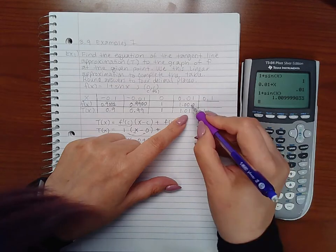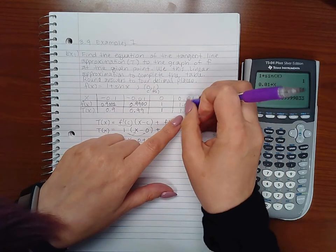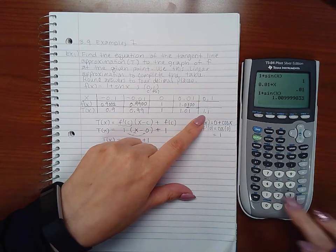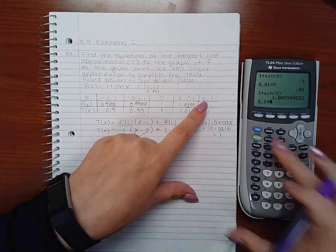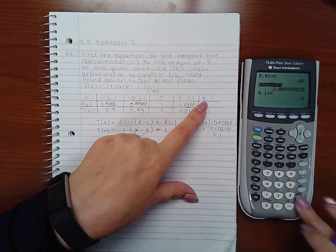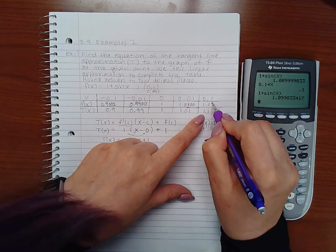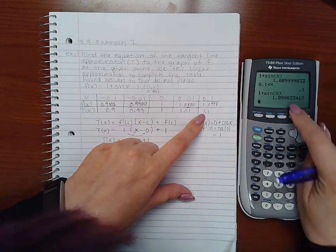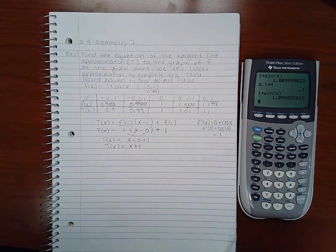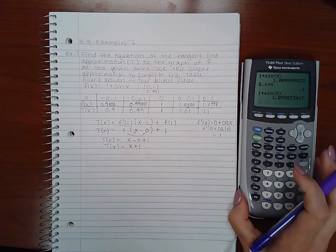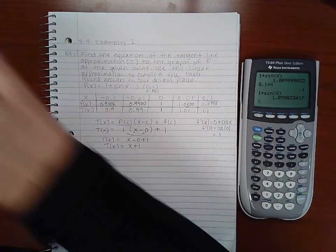We get 1.0998. The 3 in the next decimal place won't affect the 8. So we have plugged in everything needed for this particular problem.